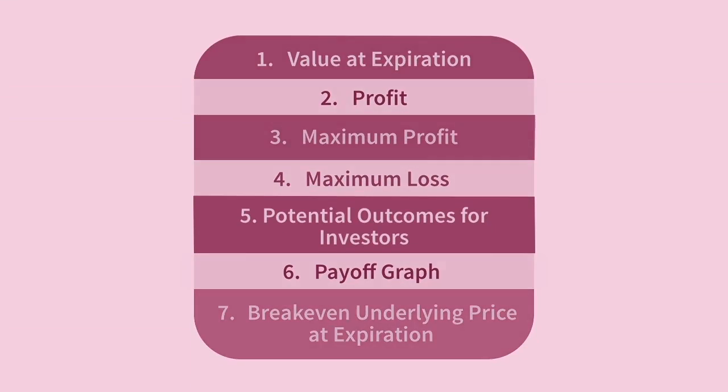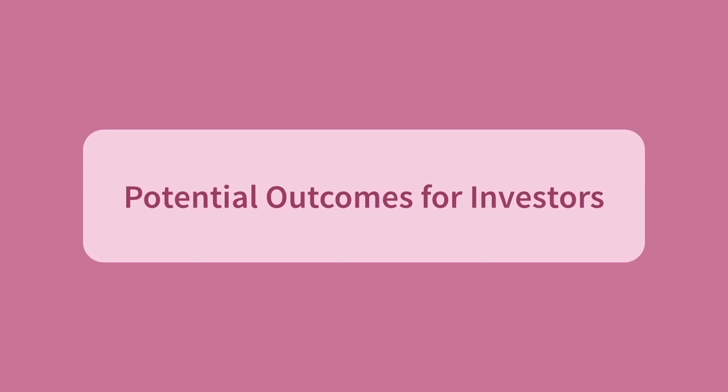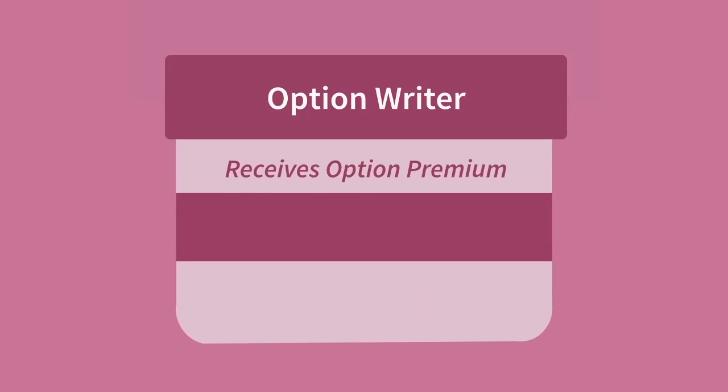Now let's look at the outcomes for investors. This section is about applying your understanding of options. Given a scenario, what situation is the investor in and what can or should they do? As an option writer, you receive an option premium and expect the underlying price will move such that you bear no liability at option expiry. The option writer is in a winning position from the beginning — they receive cash early, and if the strike price is never reached by the underlying, they are never chasing the game. Odds would seem to be in their favour.